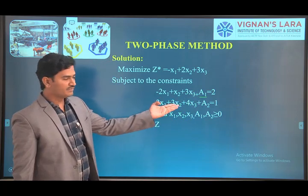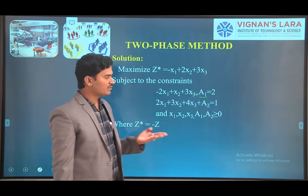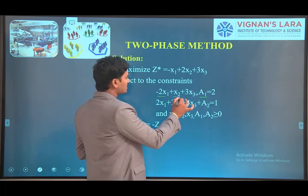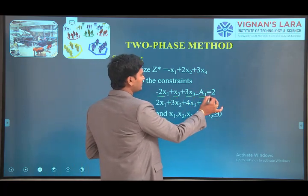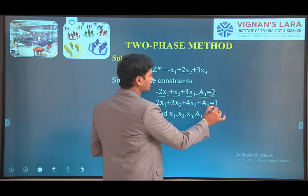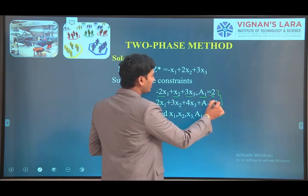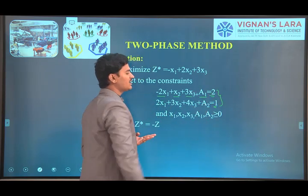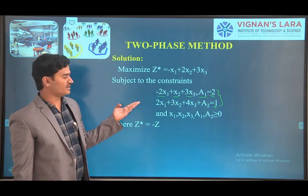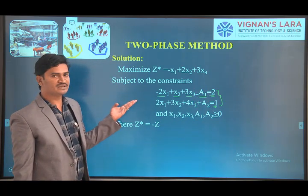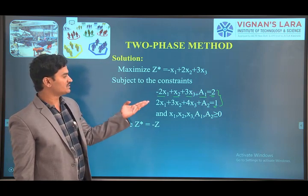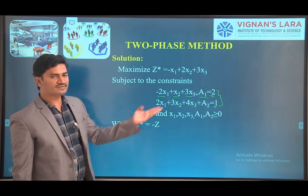When we take only artificial variables and the constraint is an equality type, we write: −2x1 + x2 + 3x3 + a1 = 2, and 2x1 + 3x2 + 4x3 + a2 = 1. By taking these artificial variables, we are finding the initial basic feasible solution and identifying the basic variables.